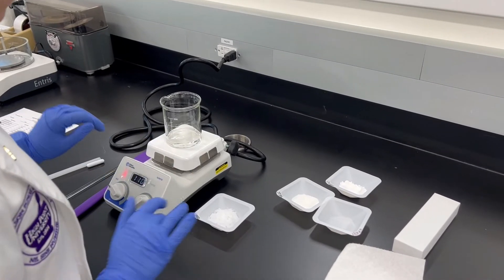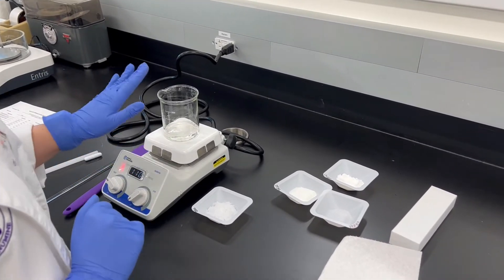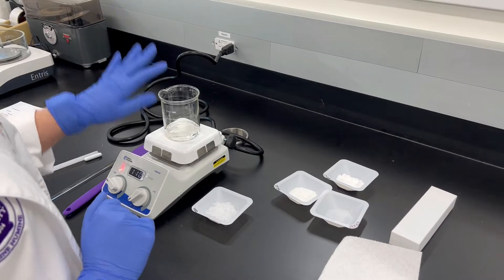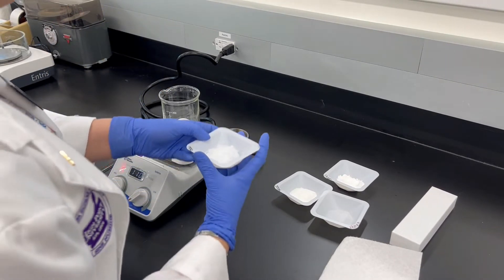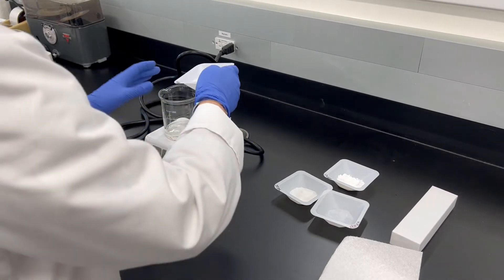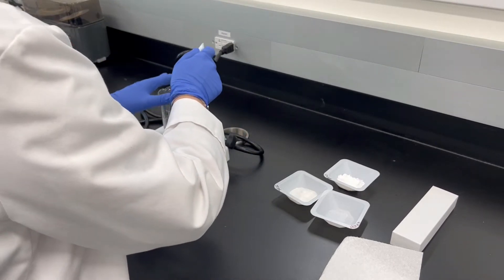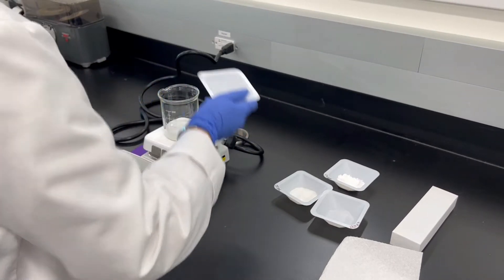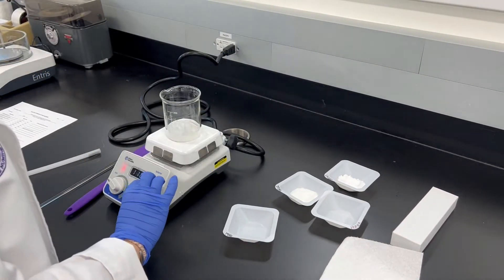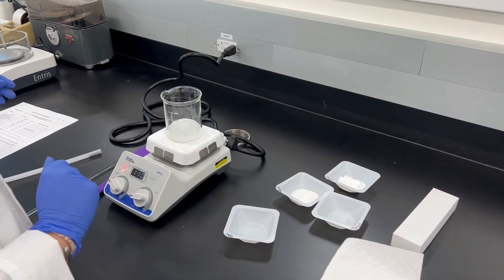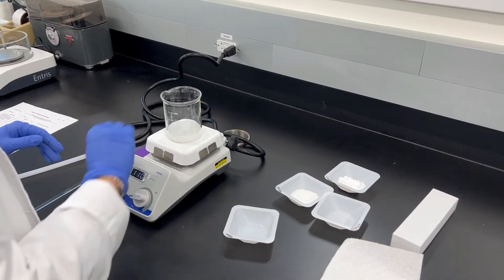The first thing you want to do is go ahead and put your PEG 400 into a beaker. You can weigh it out in the beaker, then you're going to put it on the hot plate. Once you do that, your PEG 1450, you're going to go ahead and put in here. Then I'm going to put a stir bar in there and turn it up a little bit. Then you're just going to wait for all of this to melt together.